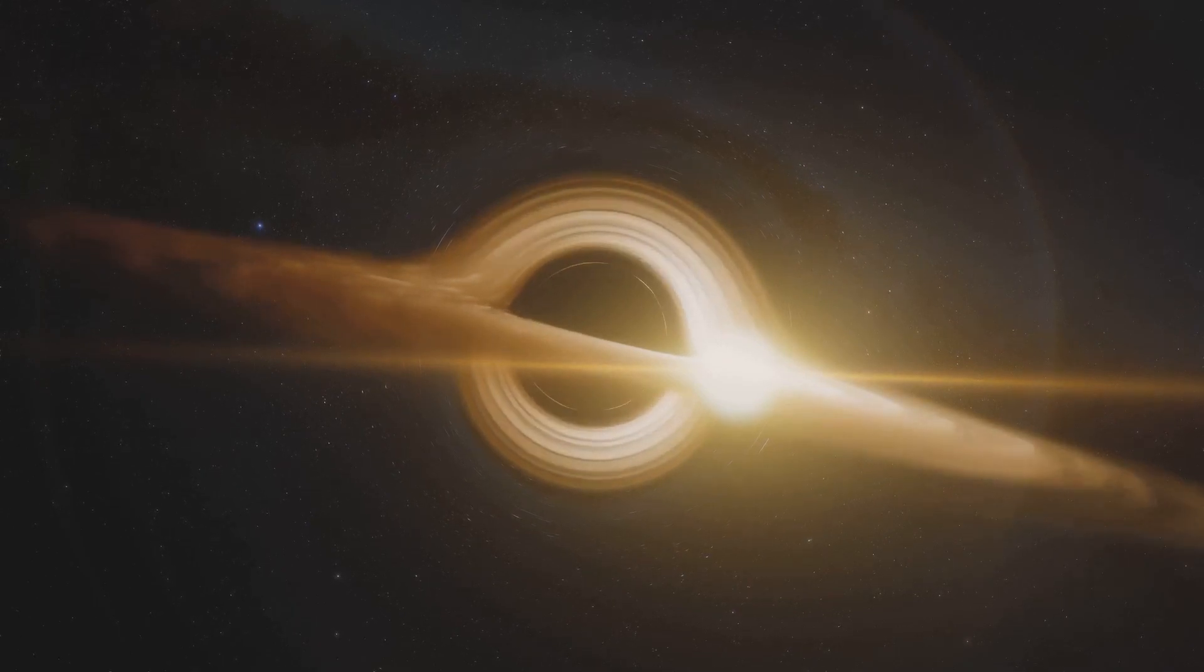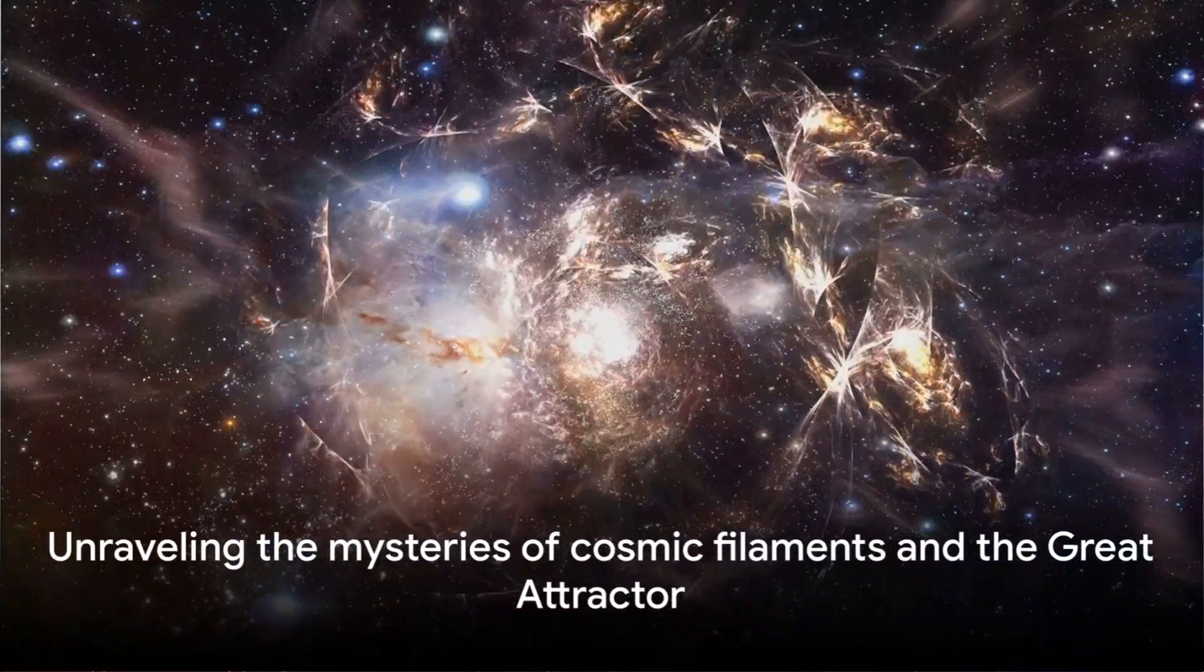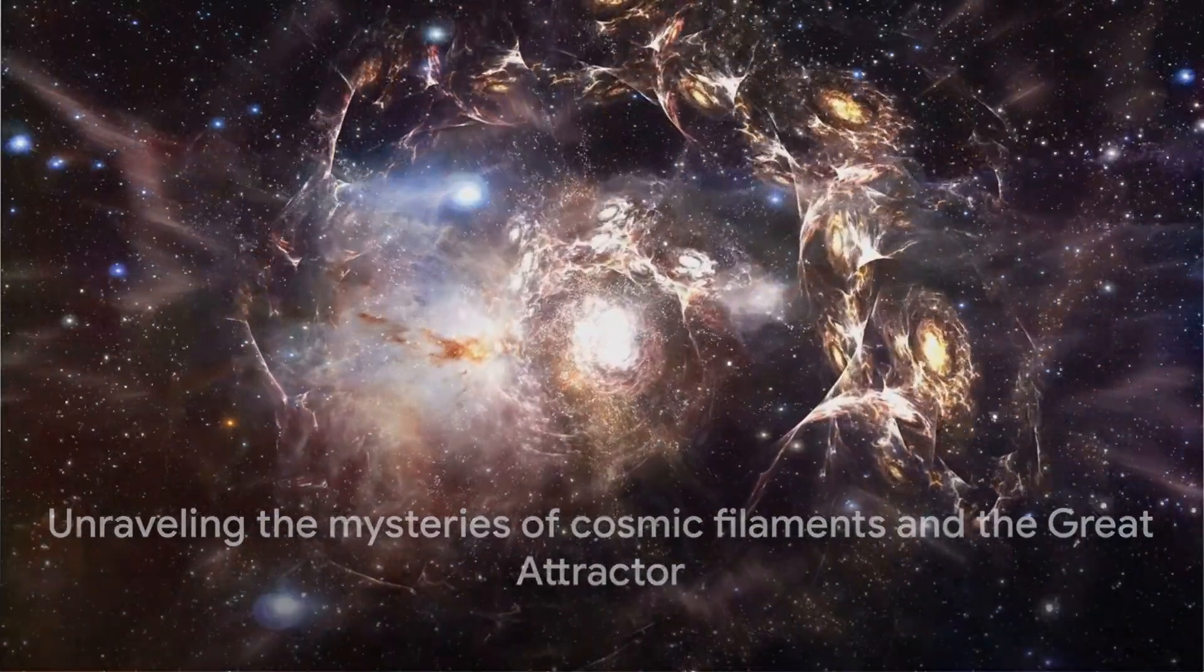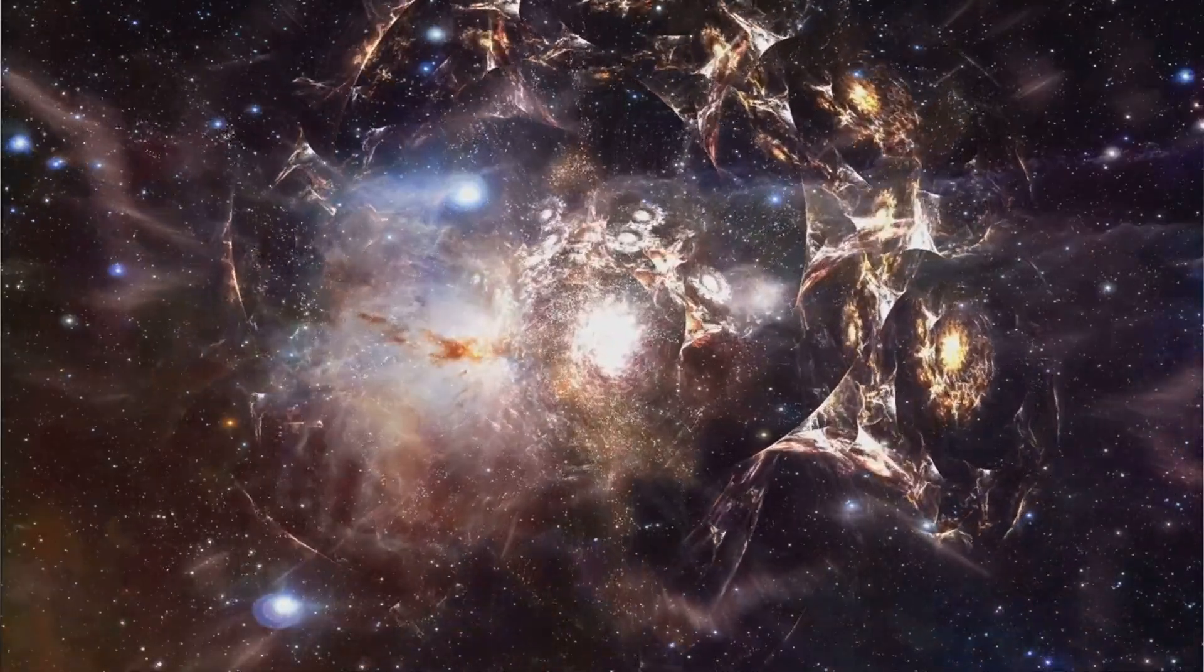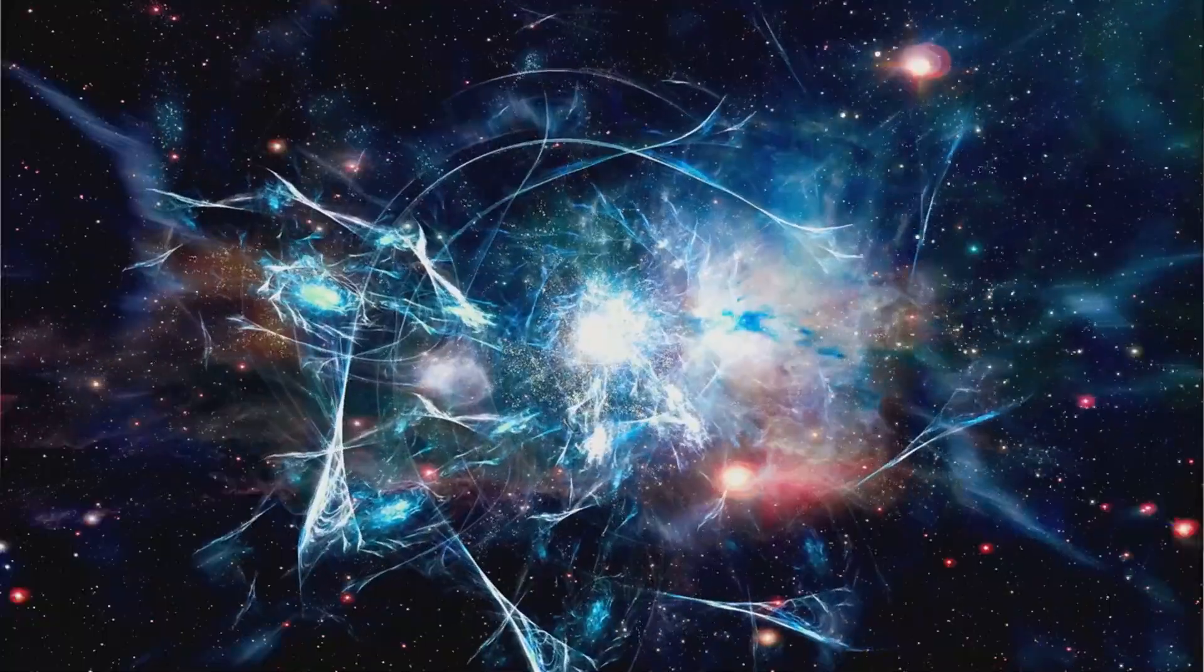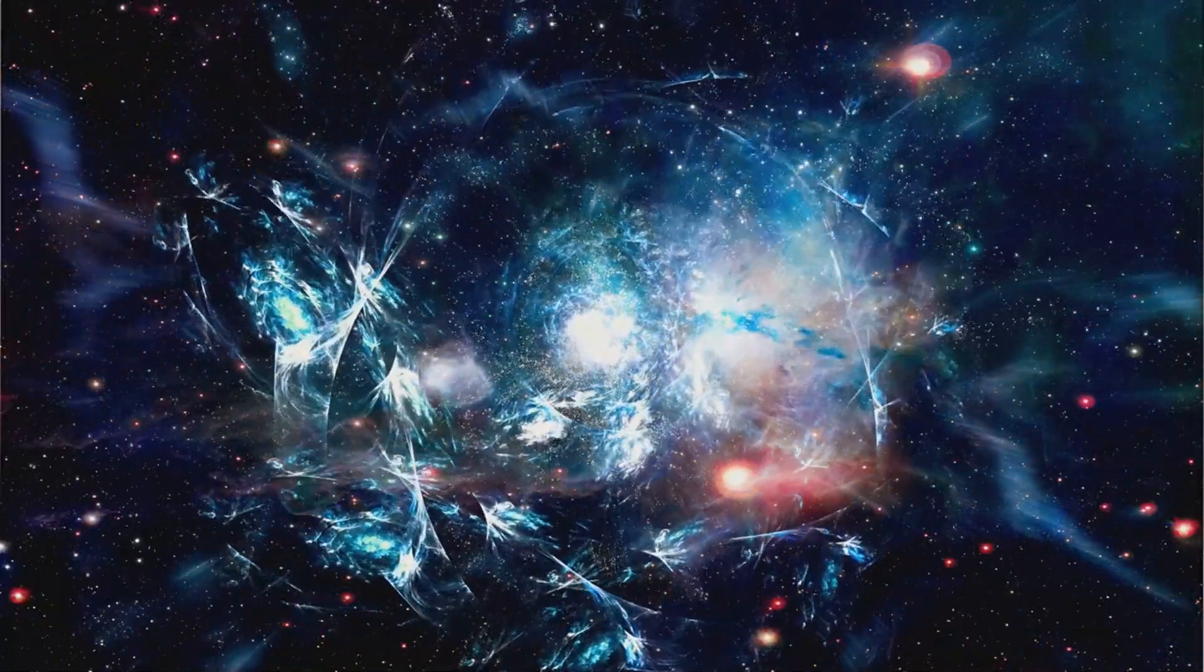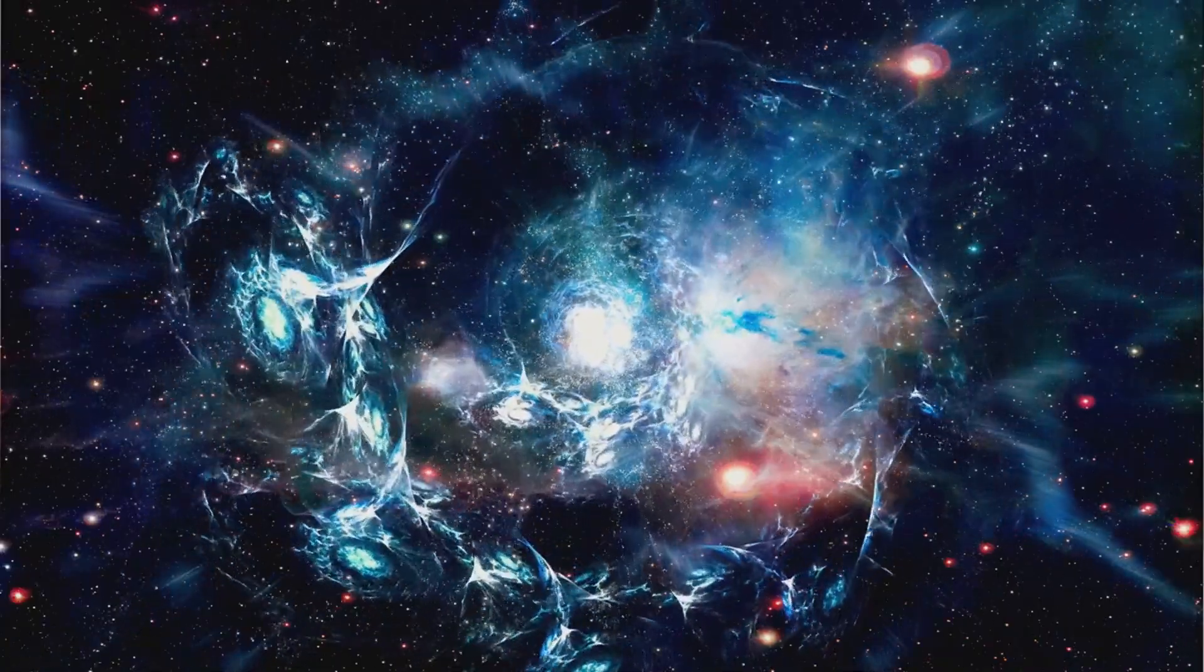Now let's zoom out and look at the bigger picture. The universe isn't just a random scattering of galaxies, it's more like a cosmic web, a network of interconnected structures known as cosmic filaments. These are the largest known structures in the universe, spanning hundreds of millions of light-years. They're essentially the universe's scaffolding, made up of dark matter and galaxies.